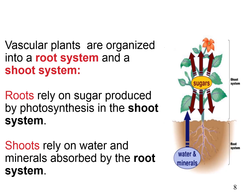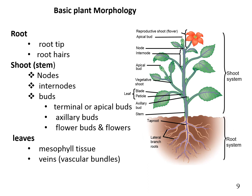Vascular plants are organized into a root system and a shoot system. Roots rely on sugar produced by photosynthesis in the shoot system, while shoots rely on water and minerals absorbed by the root system. Morphology deals with the study of the form and structure of things. The morphology of a flowering plant includes the root — consisting of root tips and root hairs — the shoot with nodes, internodes, and buds including terminal, axillary, and flower buds, as well as flowers and leaves consisting of mesophyll tissue and veins. Each part will be discussed in detail in coming lectures.